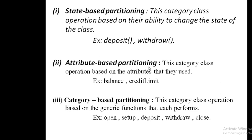The second partitioning method is attribute-based partitioning, which categorizes class operations based on the attributes they use. In the account class, attributes include balance and credit reviews. If any partition testing is based on these attributes, it falls under attribute-based partitioning.